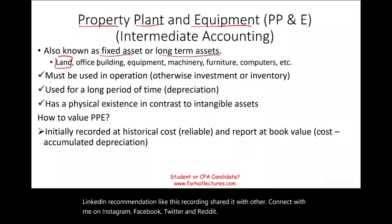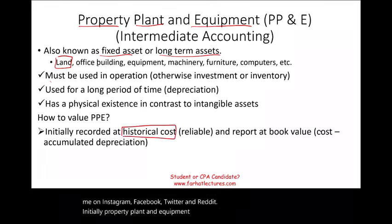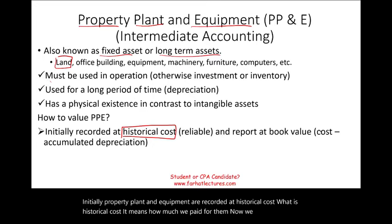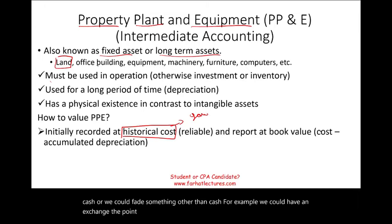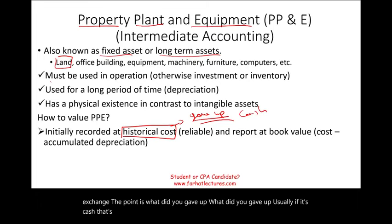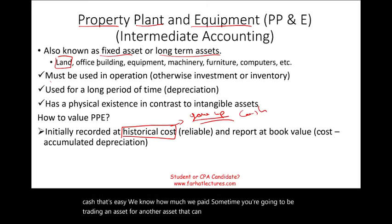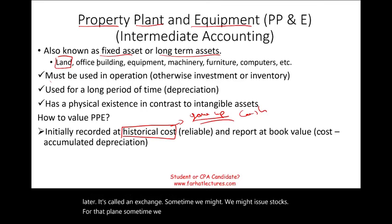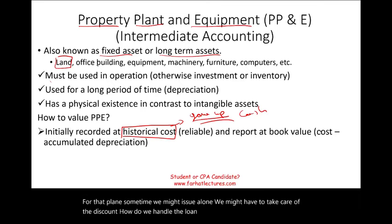Initially, property, plant, and equipment are recorded at historical cost — meaning how much we paid for them. We could have paid cash, or something other than cash, such as in an exchange. The key question is: what did you give up? If it's cash, that's straightforward. Sometimes you trade one asset for another, issue stock, or take on a loan, and we need to account for any discount. Historical cost is considered reliable, which is why we use it initially.